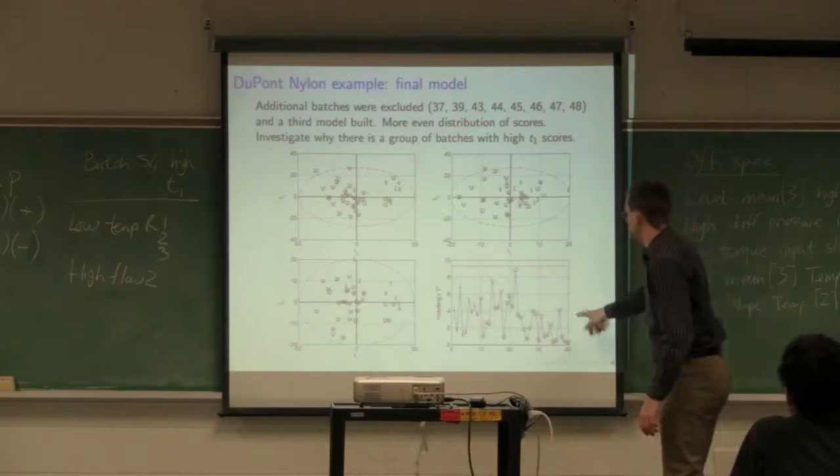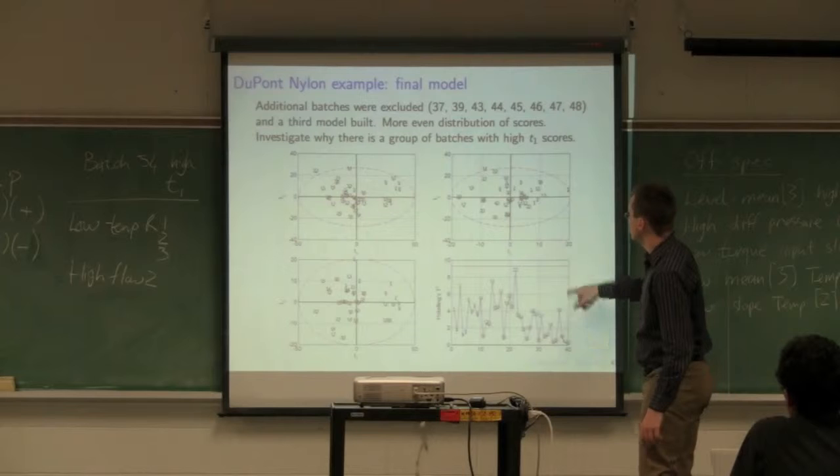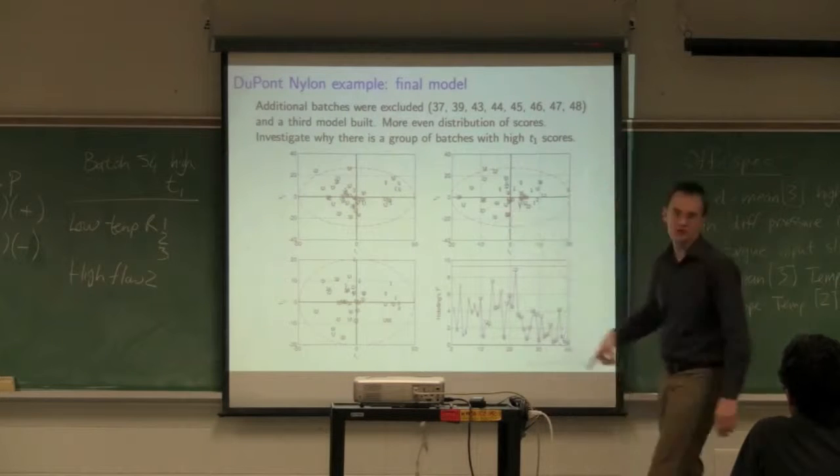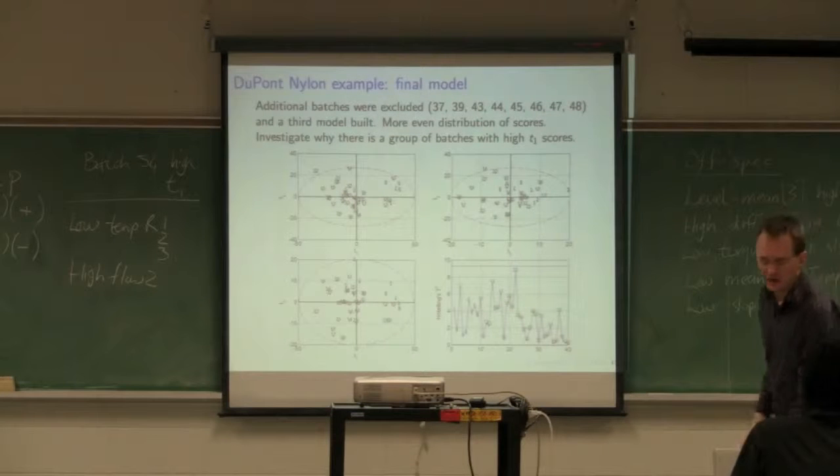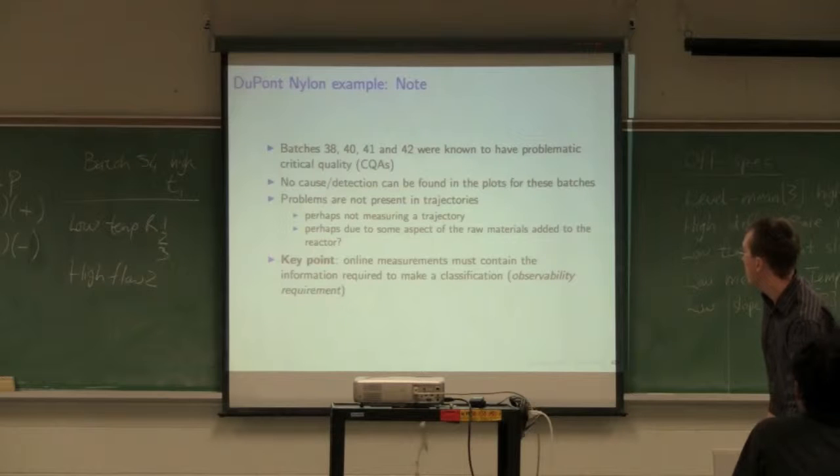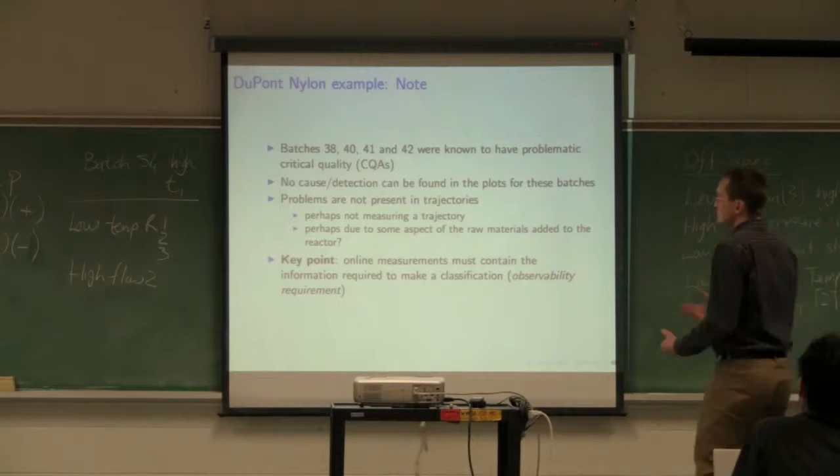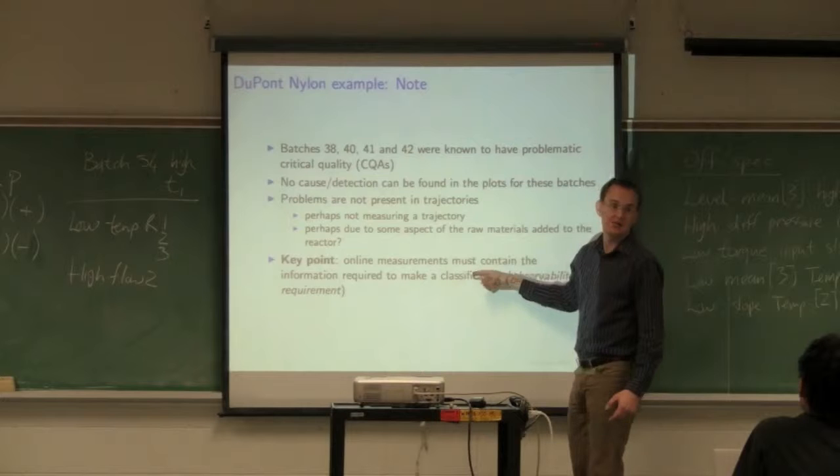If we go back to this final model after excluding all those other problems, we don't see 38, 41, and 42 sticking up. From these 10 tags, the problem experienced with those batches are not reflected in those 10 variables. From a control system's point of view, we have lack of observability.